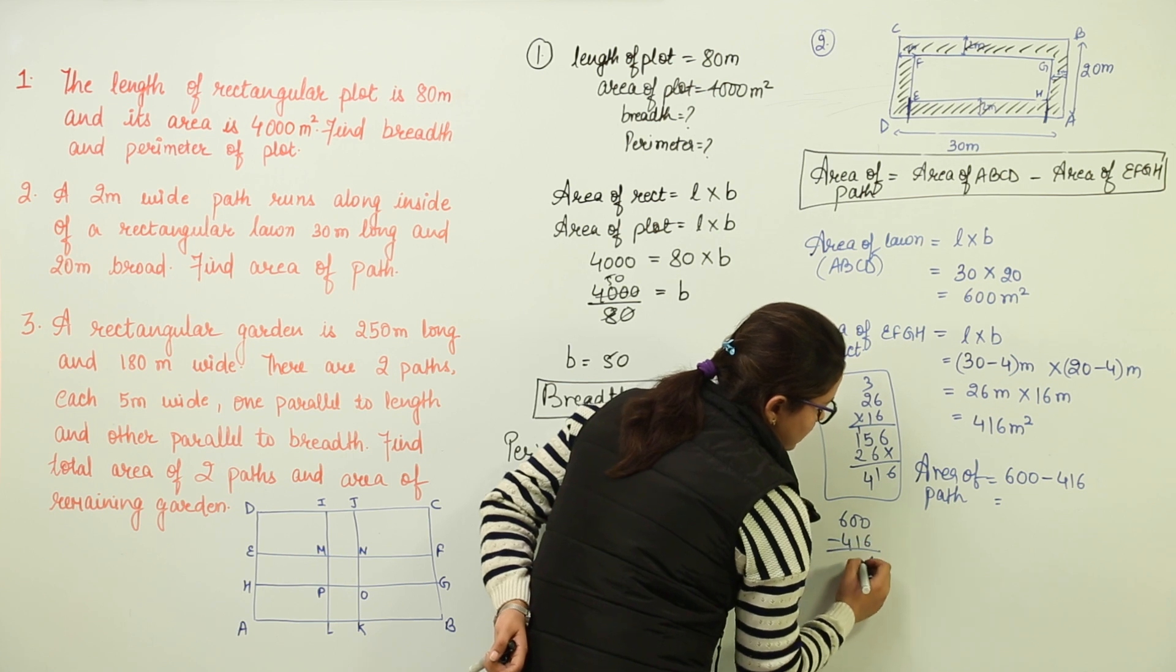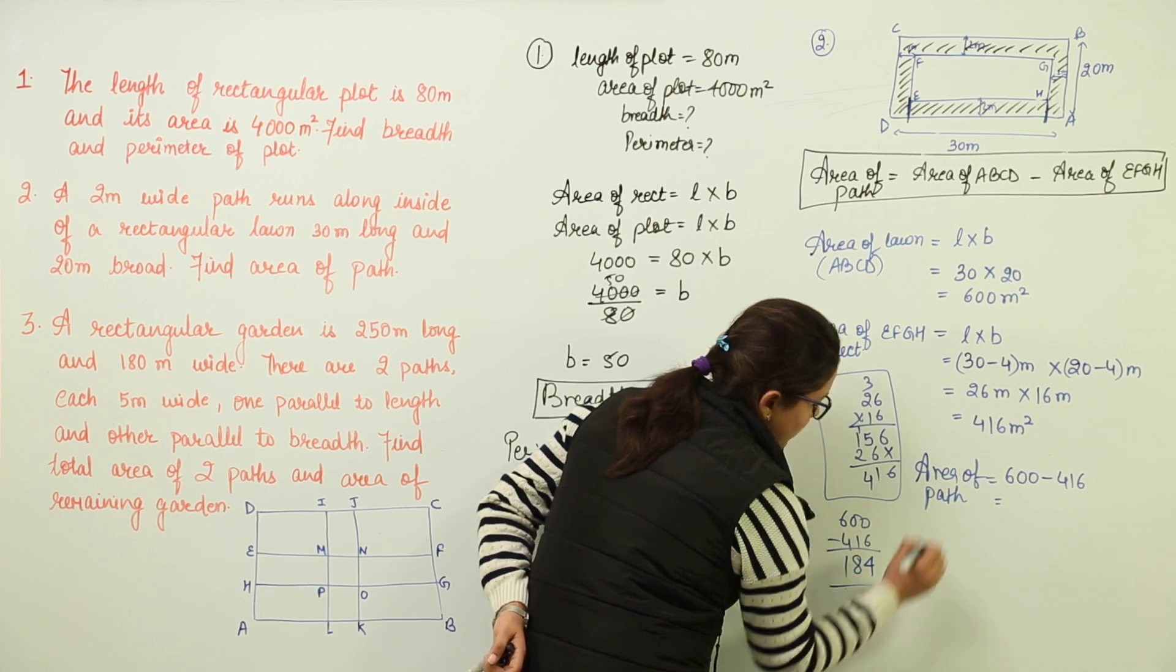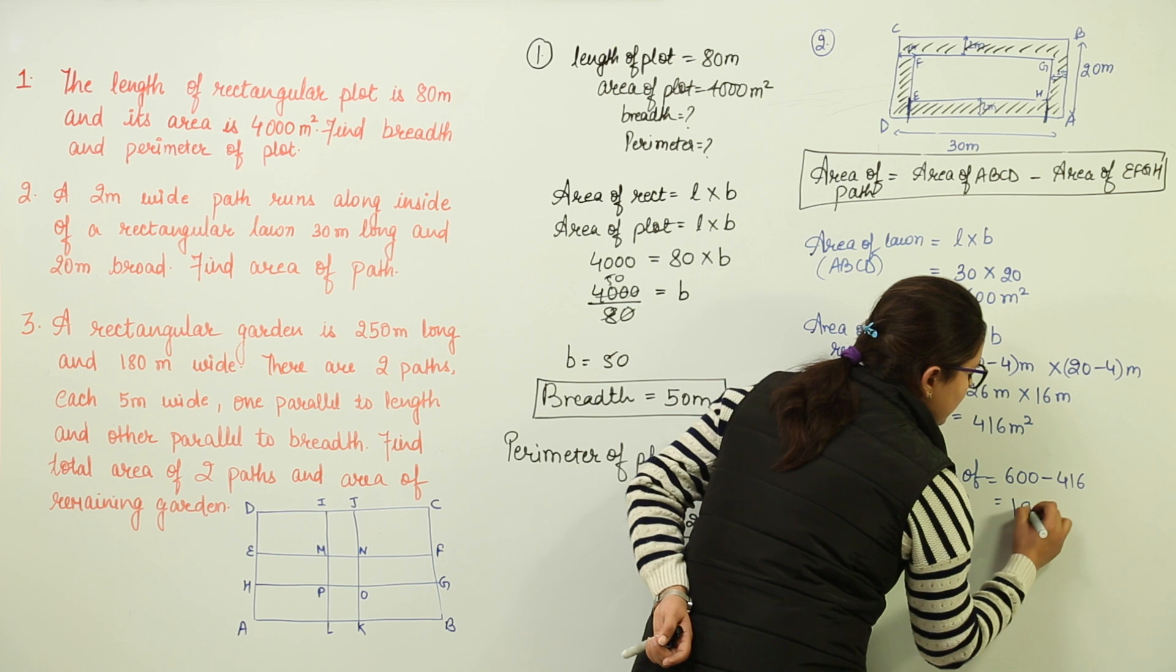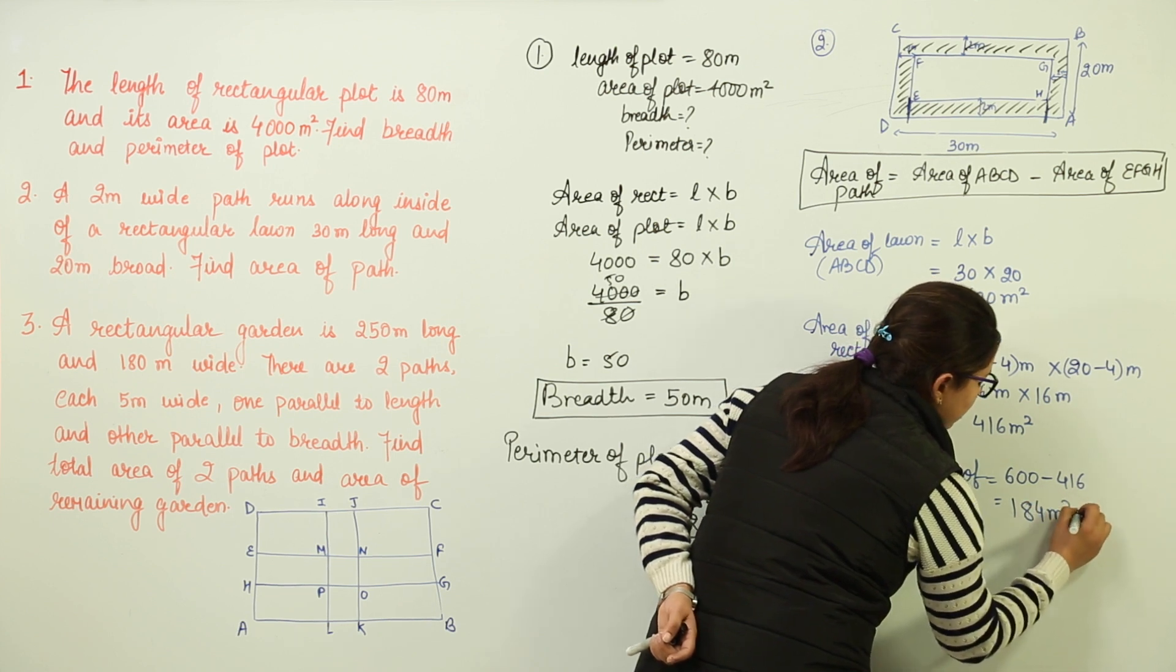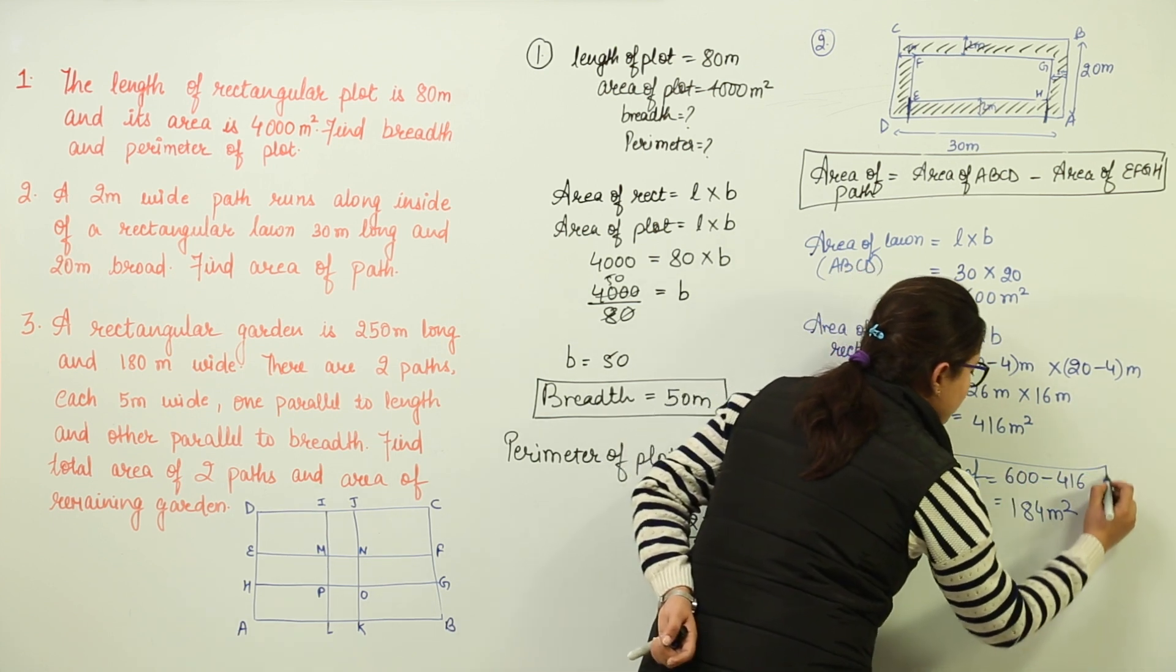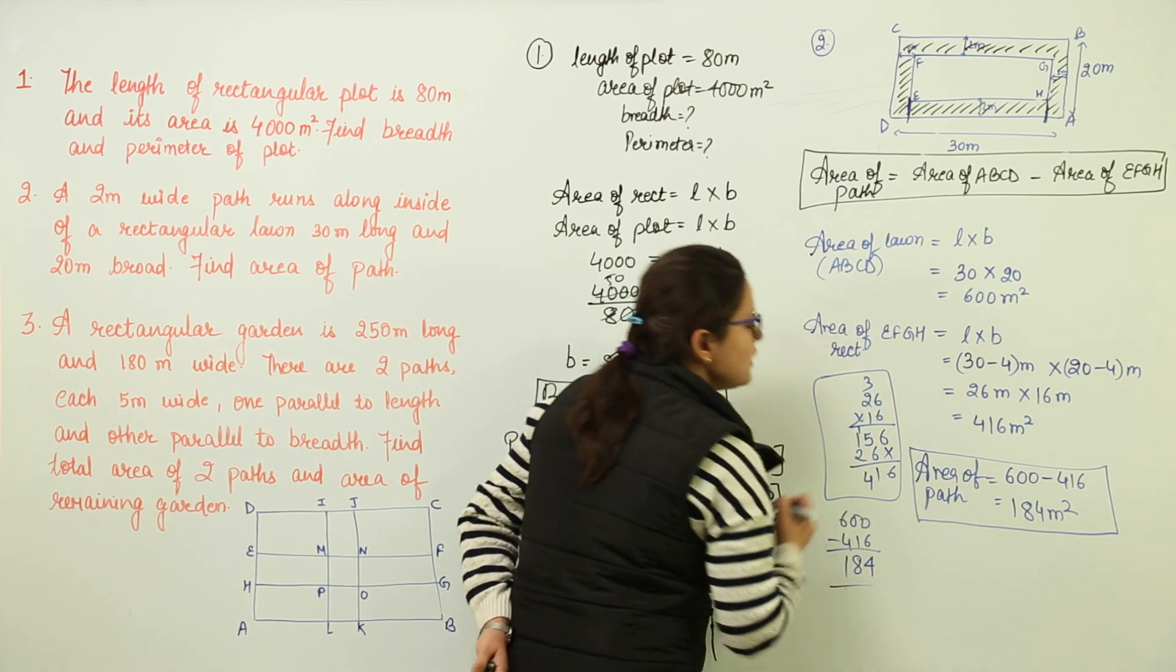Let us do it here. 600 minus 416, here you get 4, 9 minus 1, 8, 5 minus 4, 1. So you get 184 meters squared as the area of path that was required to be calculated.